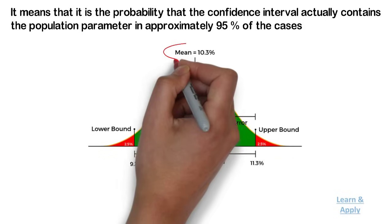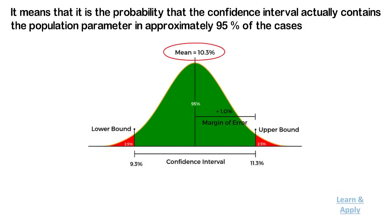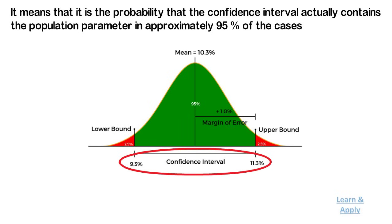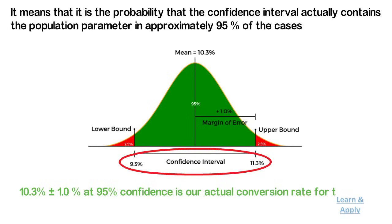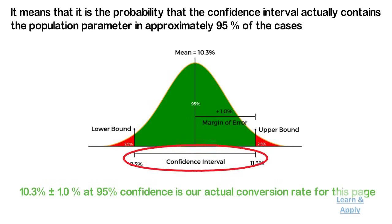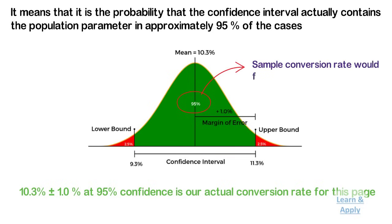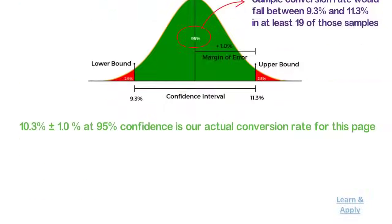In this pictorial example, the 10.3% conversion rate is the mean. The plus or minus 1% is the margin of error, giving us a confidence interval spanning from 9.3% to 11.3%. So, 10.3% ± 1% at 95% confidence is our actual conversion rate for this page. Here, 95% is the confidence level, indicating that if we take a total of 20 samples, the sample conversion rate would fall between 9.3% and 11.3% in at least 19 of those samples.